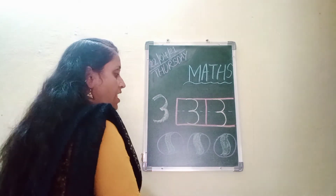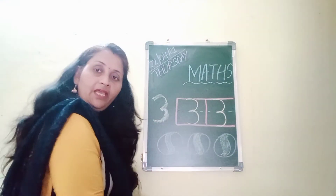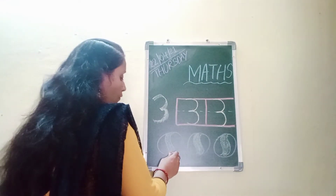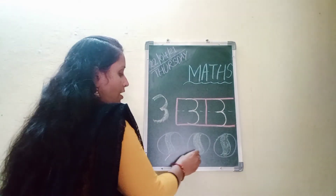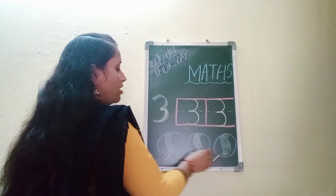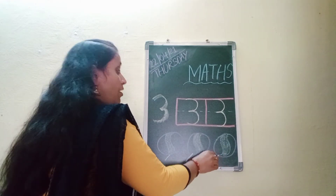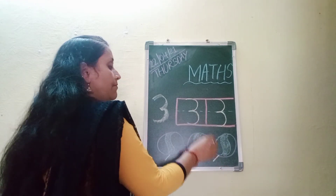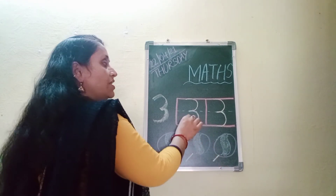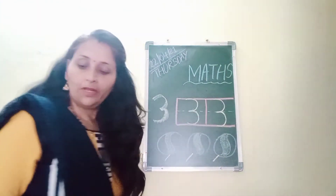How many balls? Count with me. 1 ball, 2 ball, 3 ball. How many balls? 3 ball. 3 number. 3 ball. 3 number.